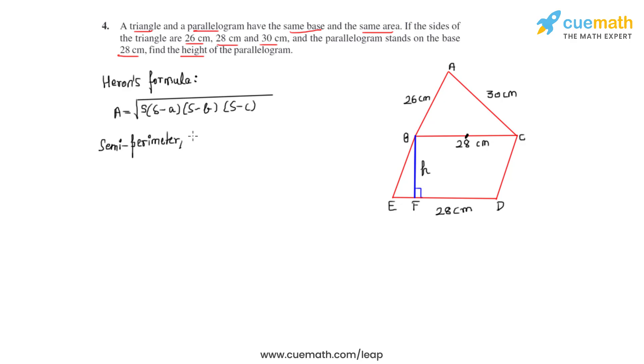And that can be found by adding up its three side lengths and dividing it by 2. So we start adding 26 plus 28 plus 30 centimeters and divide that by 2. So on calculation we get the semi-perimeter S for triangle ABC to be equal to 42 centimeters.